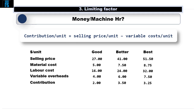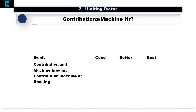At first glance you might conclude that the best product to make is the Better as it generates the highest contribution per unit, but we need to bear in mind how many machine hours it takes to make each unit. A Good takes 4 machine hours to make, so the contribution per hour is $0.50. A Better takes 3 machine hours, giving a contribution per hour of $1.17. And a Best takes 2.5 machine hours, giving a contribution per hour of $1.30.